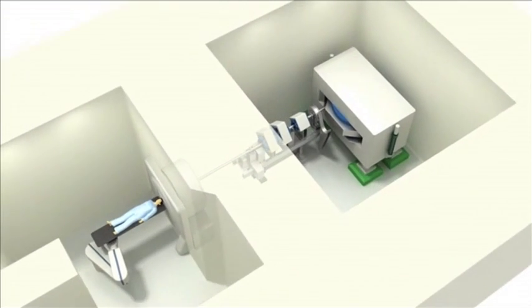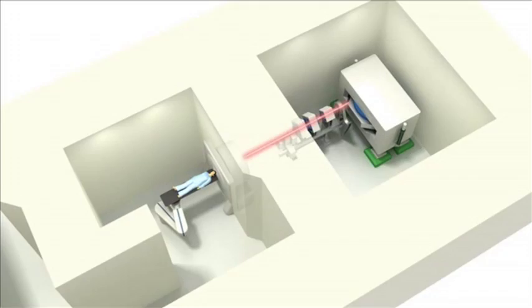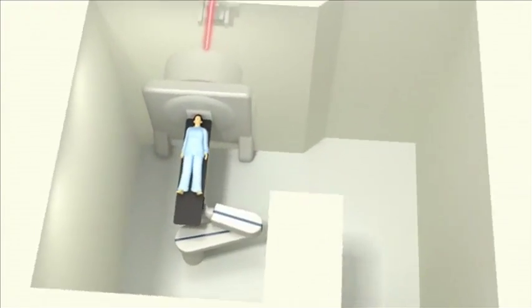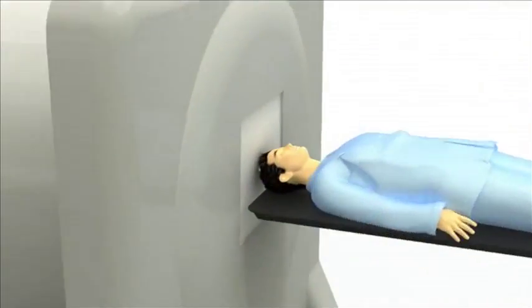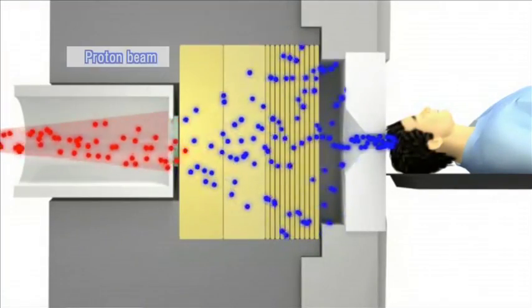The accelerated proton beam is transported to the neutron irradiation treatment section. Then the transported proton beam is irradiated onto the beryllium target to produce neutrons.